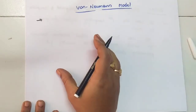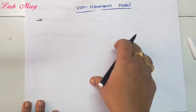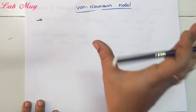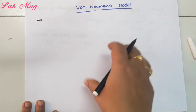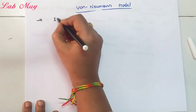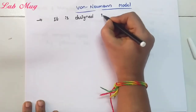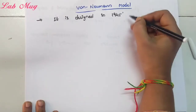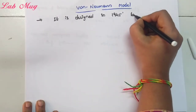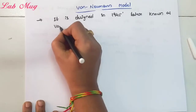First of all, this architecture was designed previously in the 1940s. In 1945, Von Neumann proposed and gave it the name Von Neumann model. It was designed in 1945 and after that it was modified as Von Neumann architecture.